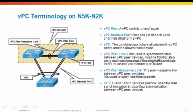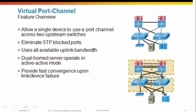Now let's see our feature overview. What does VPC do? It allows a single device to use a port channel across two upstream switches — that's the key difference between a port channel and a virtual port channel. It also eliminates spanning tree protocol blocked ports, uses all available uplink bandwidth in an active-active scenario where both links will be up. Dual-homed servers will operate in active-active as well as switches. VPC provides fast convergence upon link or device failure.